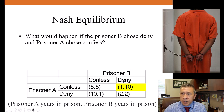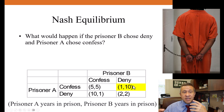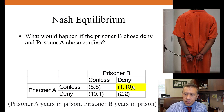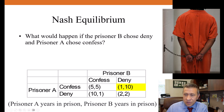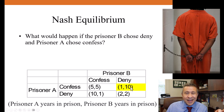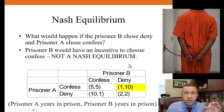What happens if prisoner B chose deny and prisoner A chose confess? Is it a Nash Equilibrium? The answer is no. It is a Nash Equilibrium only if neither player would want to change their choice given the actions of the other player. At this outcome, the person getting 10 years clearly would want to change their choice — instead of choosing to deny the crime, player B would rather confess, moving to the confess/confess outcome and getting five years instead of 10. So prisoner B denying and prisoner A confessing is not a Nash Equilibrium.